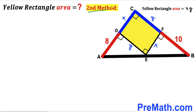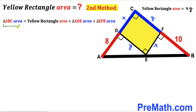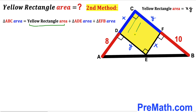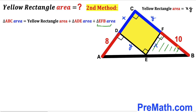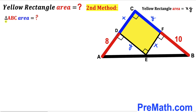Here is the second method. The area of the whole triangle ABC equals the sum of three individual areas: the yellow rectangle area, plus the triangle ADE area, plus the triangle EFB area. We already know the rectangle area is X times Y, and now we calculate the areas of triangles ABC, ADE, and EFB.